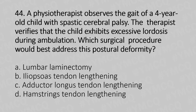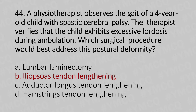Moving to our 44th question. A physiotherapist observed the gait of a four-year-old child with spastic cerebral palsy. The therapist verifies that the child exhibits excessive lordosis during ambulation. Which surgical procedure would best address this postural deformity? Option A: Lumbar Laminectomy. Option B: Iliopsoas Tendon Lengthening. Option C: Adductor Longus Tendon Lengthening. Option D: Hamstring Tendon Lengthening. And the answer is Option B: Iliopsoas Tendon Lengthening.